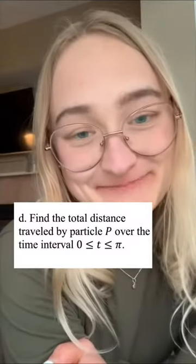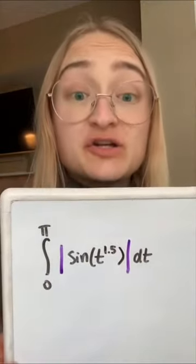Finally, pause for part D. Distance traveled means we need to integrate velocity, but be careful. We want total distance, which means we need to add both forwards and backwards motion. So we need the absolute value of P's velocity function in the integral.